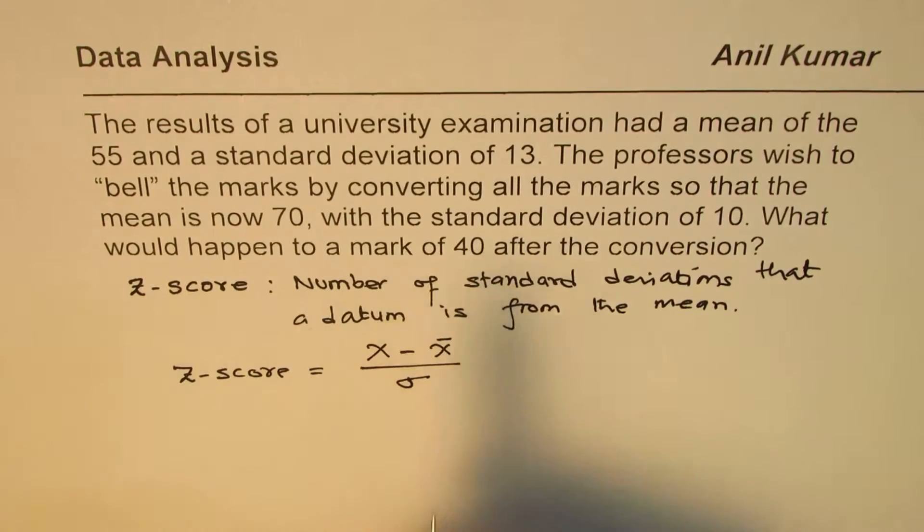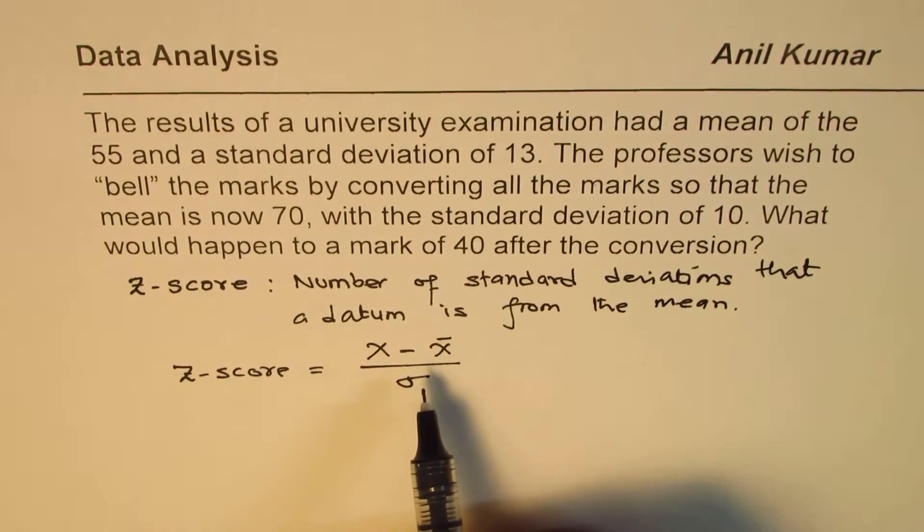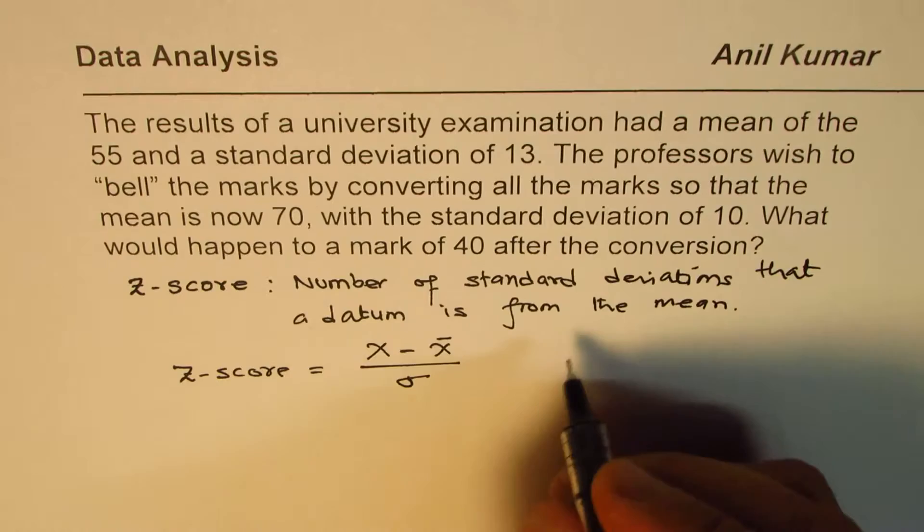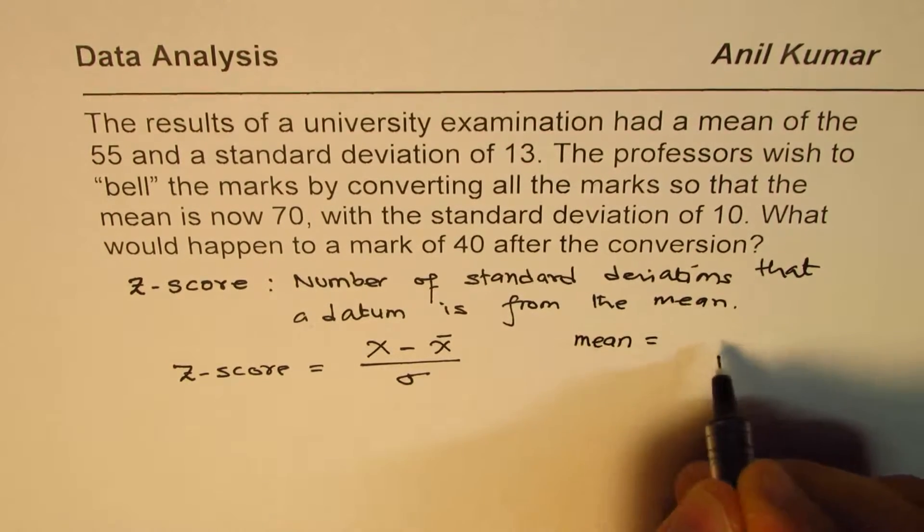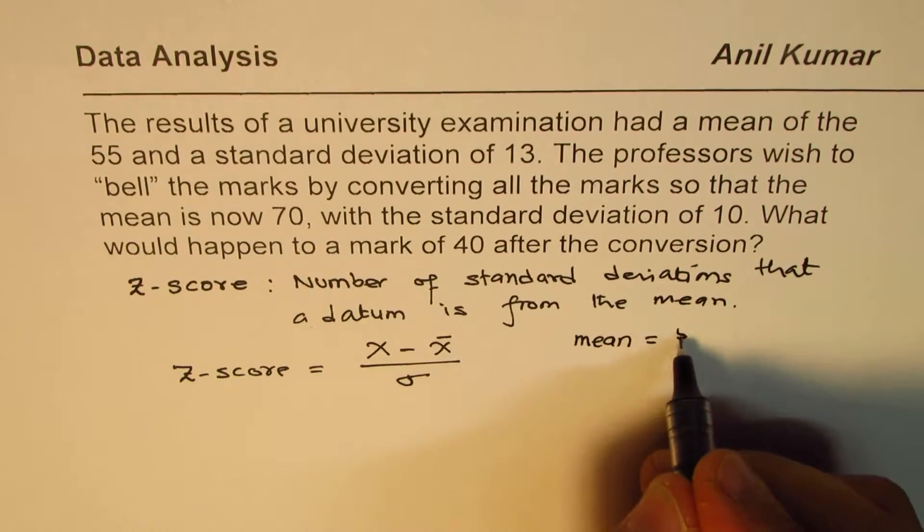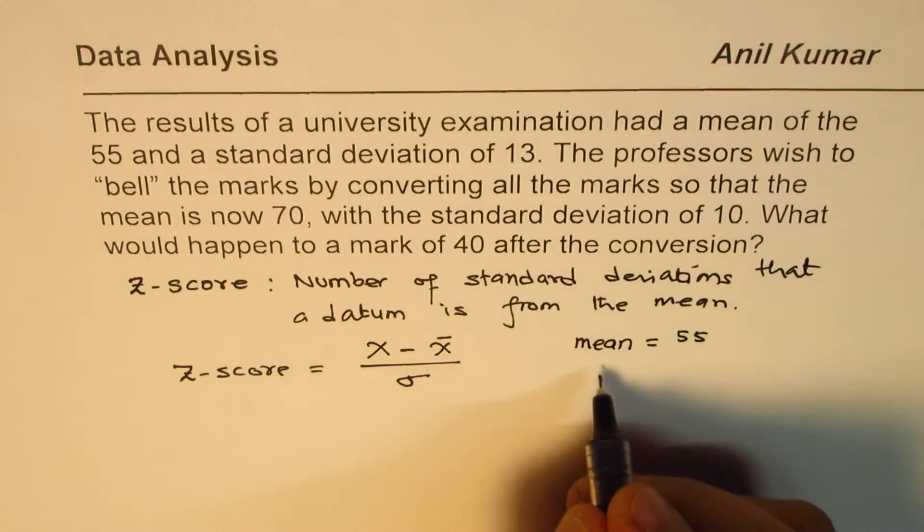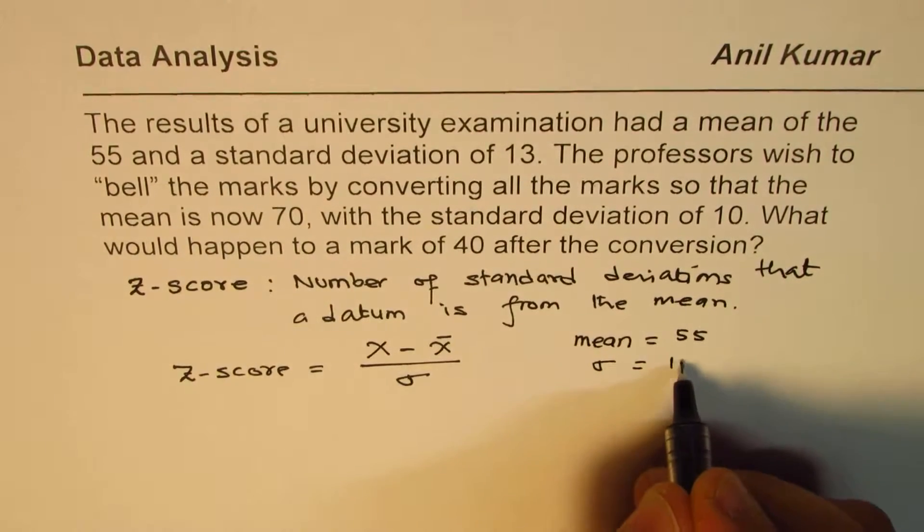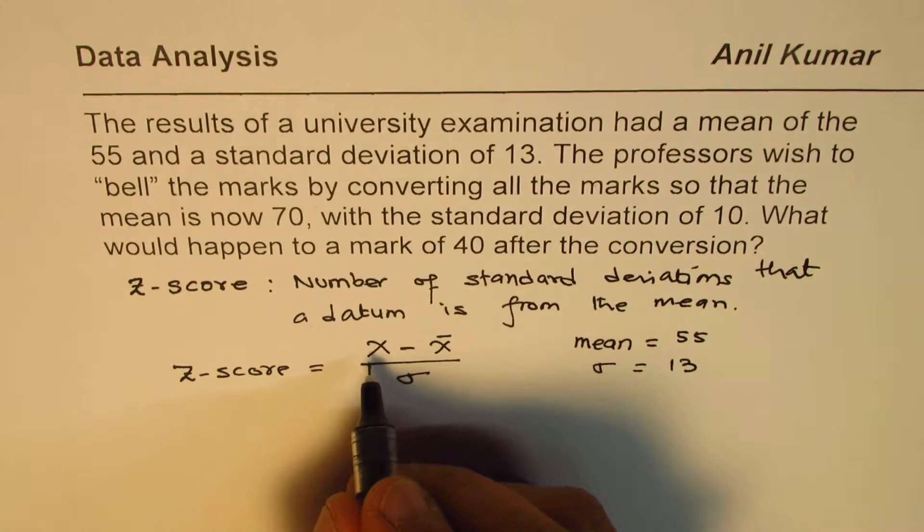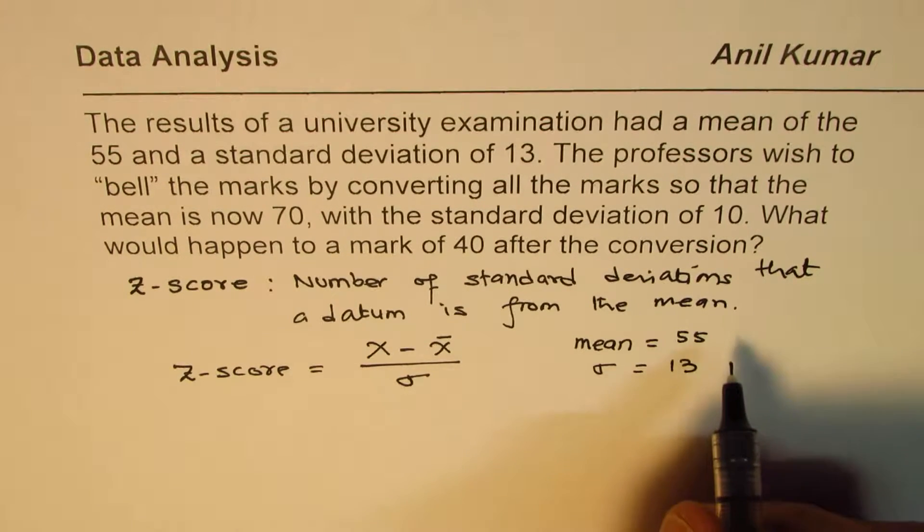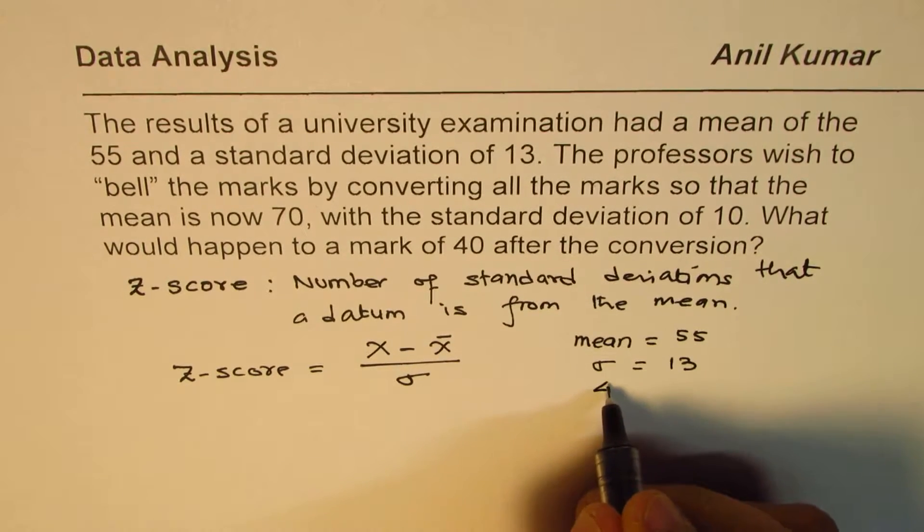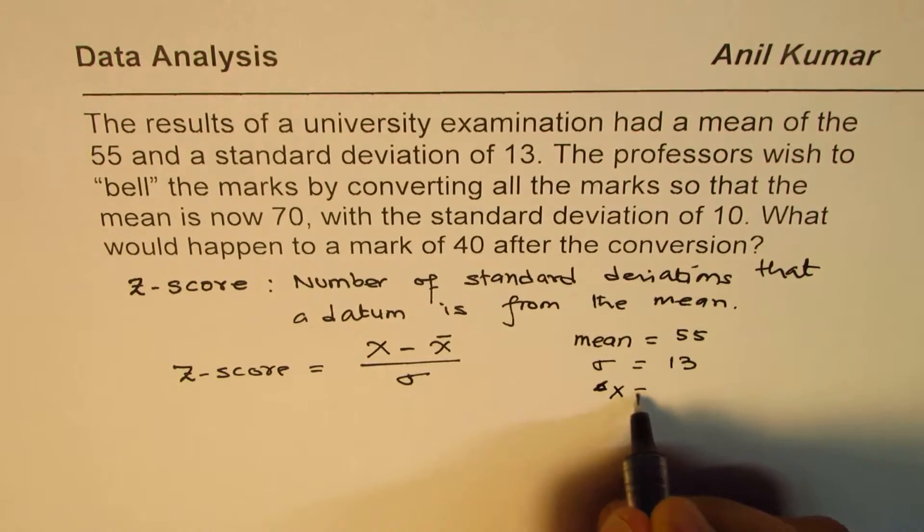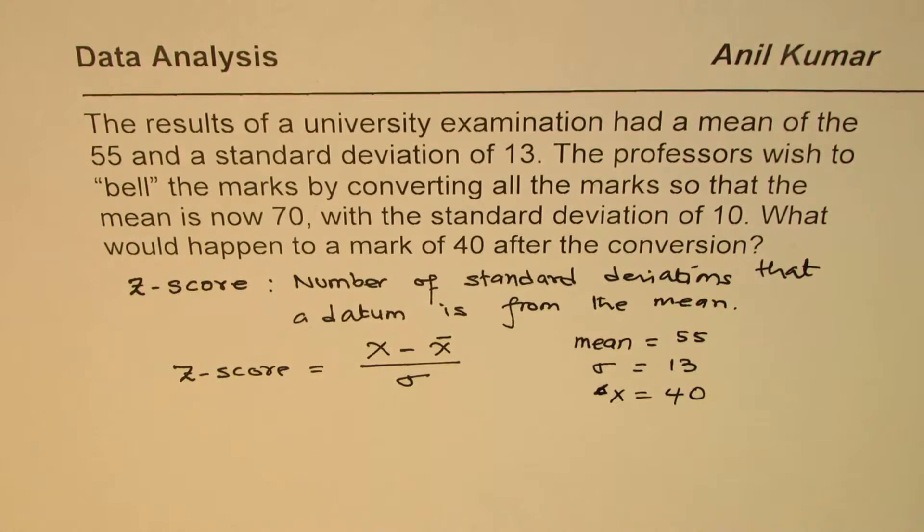In this particular case, what are we given? We are given mean equals 55, standard deviation sigma is given to us as 13, and the value of x is given to us as 40.